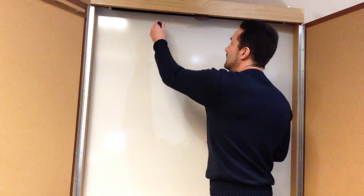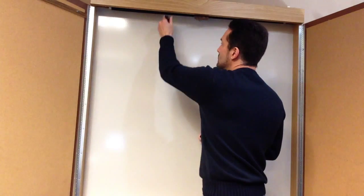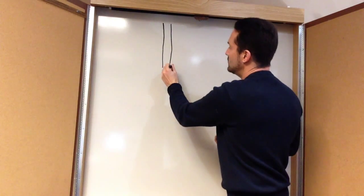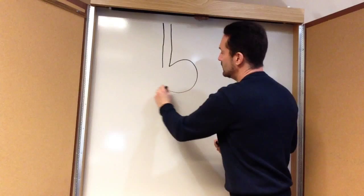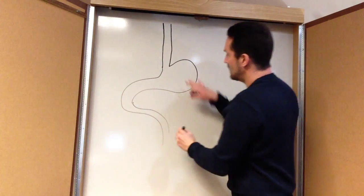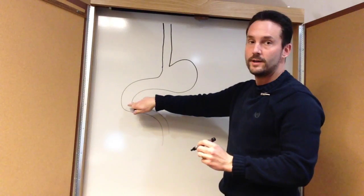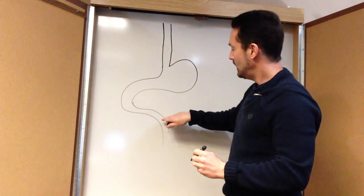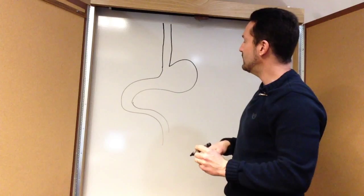First, let's go ahead and draw the stomach and the first part of the intestine. So here's your esophagus, the swallowing tube. Your stomach kind of looks like this. And your stomach is here. This is called your duodenum, the first part of the intestine, and then the jejunum, the middle part of the intestine.